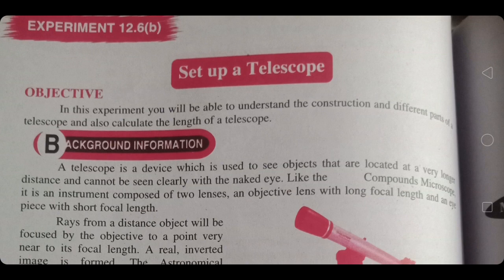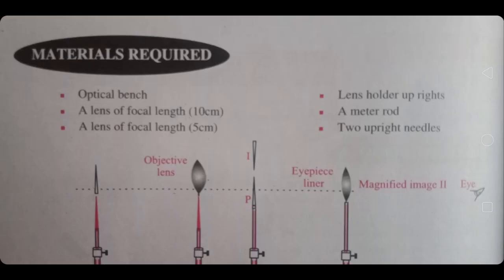In the case of a microscope, the objective lens is of small focal length and the eyepiece is of large focal length. But in the case of a telescope, the sequence is reversed — the eyepiece is of small focal length and the objective lens used in the telescope is of large focal length.